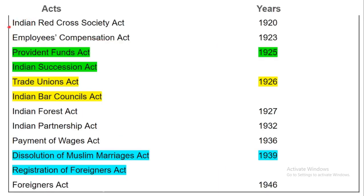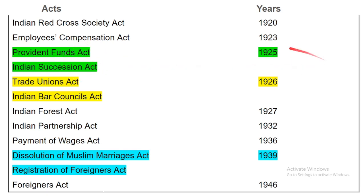Indian Red Cross Society Act was passed in 1920. Employees Compensation Act was passed in 1923. Providence Funds Act and Indian Succession Act — these two acts passed in the year 1925. Note that the legislation passed in the same year have been given the same colour.